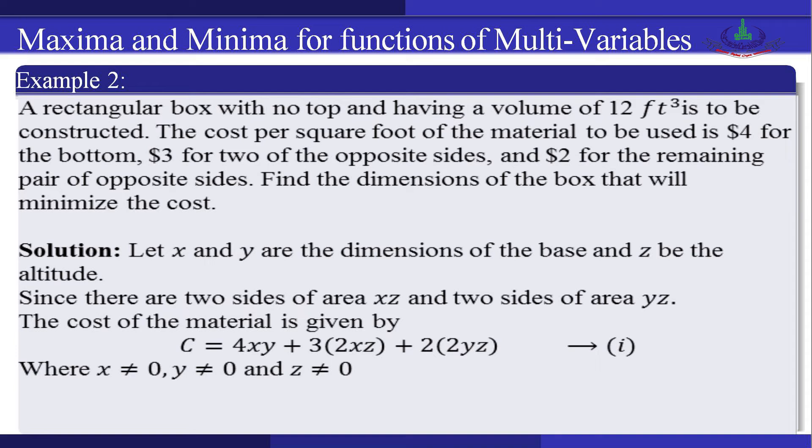Let x and y be the dimensions of the base and z the altitude. Since there are two sides of area xz and two sides of area yz, the cost function C = 4xy + 3(2xz) + 2(2yz), where x, y, and z are all nonzero.